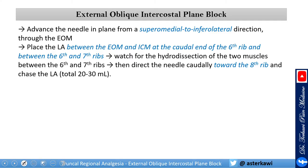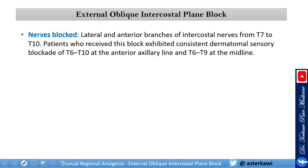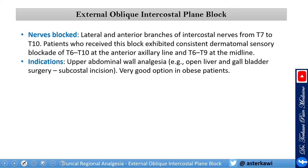Usually use 20 to 30 ml of local anesthetic. This block covers the lateral and anterior branches of the intercostal nerves from T7 to T10. Patients who received this block exhibited consistent dermatomal sensory blockade of T6 to T10 at the anterior axillary line and T6 to T9 at the midline based on cadaveric studies. It is a good option for upper abdominal wall analgesia, especially open liver and open gallbladder surgery — similar to a subcostal tap block. It is particularly helpful in extremely obese patients where subcostal TAP block is very difficult, as this approach is easier, more reliable, and consistent.